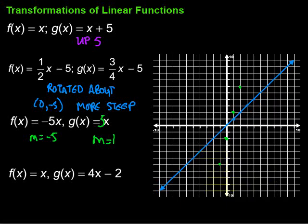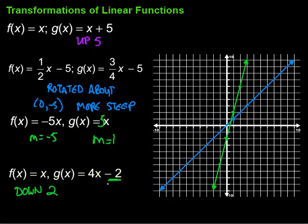Comparing the two lines: first, the intercept was changed — it went from 0 down to negative 2, so the line moved down 2. Also, the slope changed from 1 to 4, so it rotated and became more steep. Two things changed: the y-intercept shifted and the slope increased.